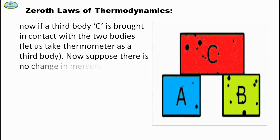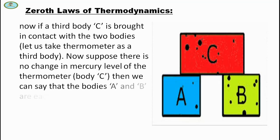Suppose there is no change in mercury level of the thermometer. Then we can say that bodies A and B are each in thermal equilibrium with the third body C.